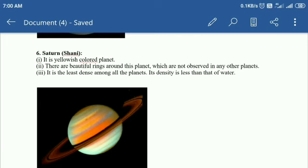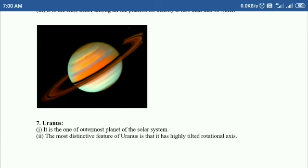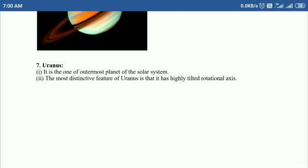Its density is less than that of water. Saturn is a yellow colored planet with beautiful rings around it, and it is the least dense among all the planets.